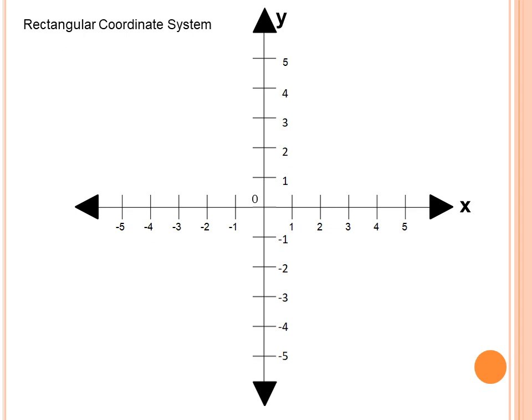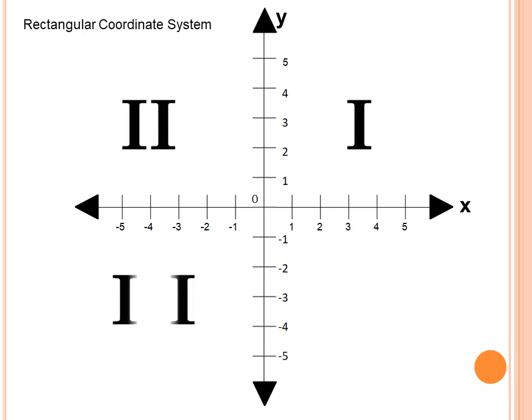The direction of the quadrants is counterclockwise: quadrant one, quadrant two, quadrant three, and quadrant four. The direction is counterclockwise.